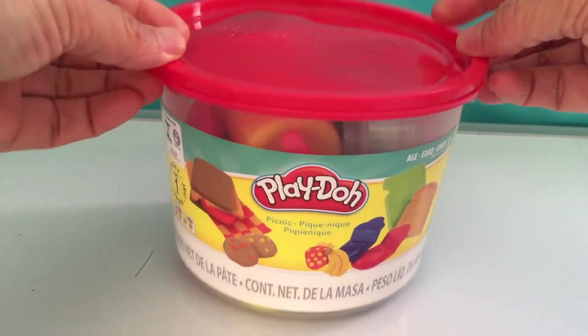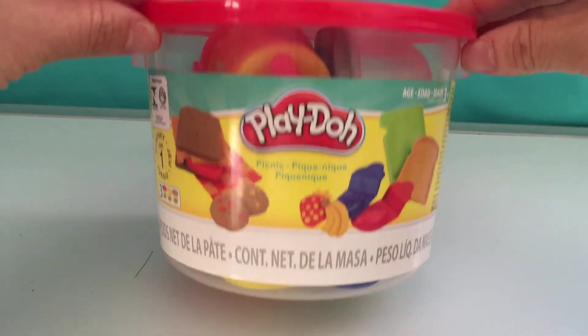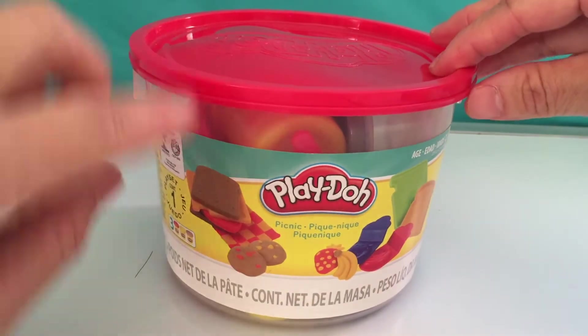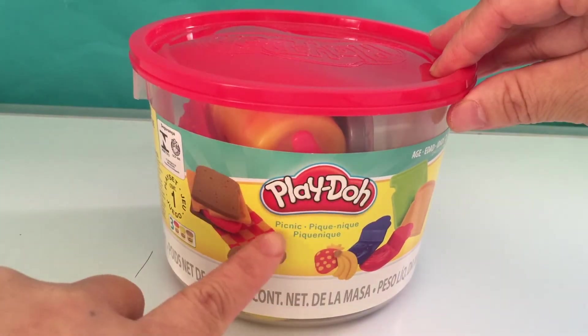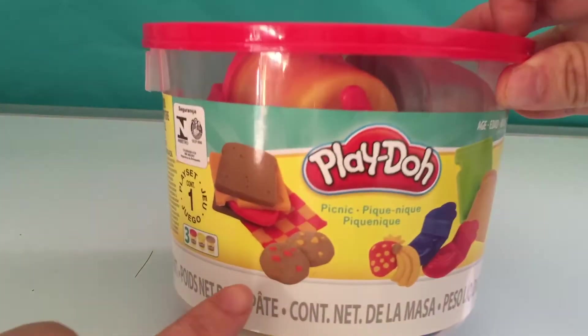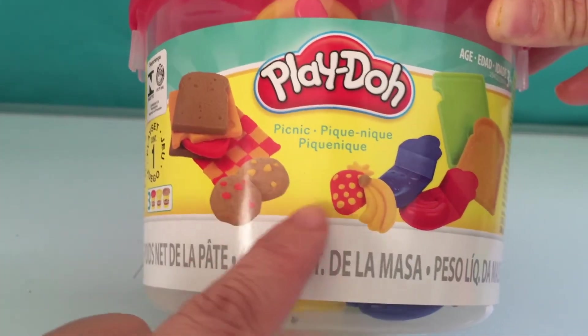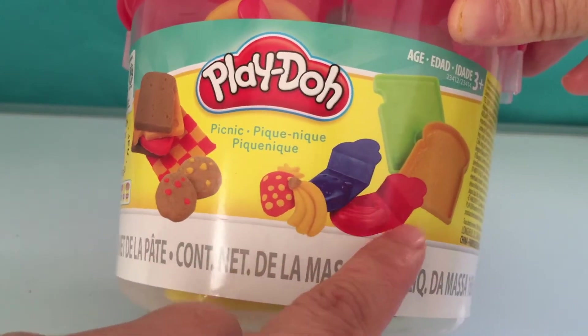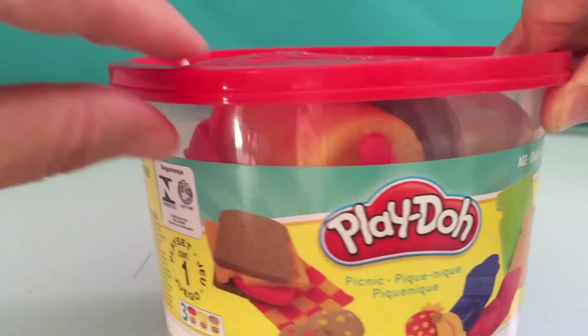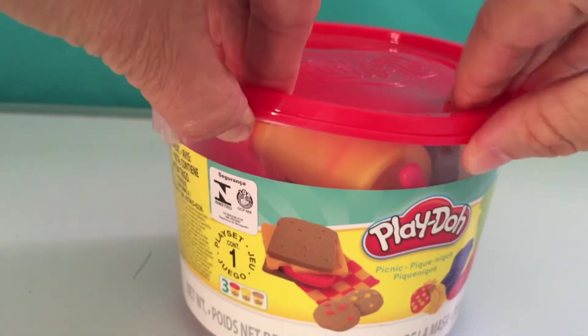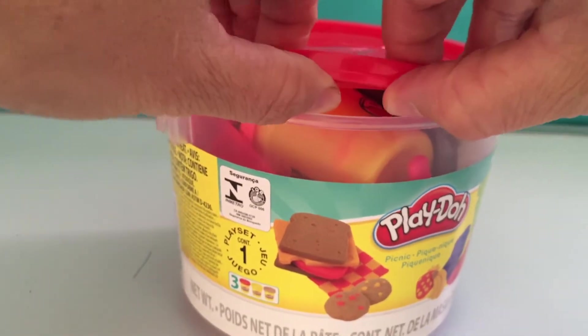Hello everyone! I've got a box of Play-Doh here. It's Play-Doh for picnic! Sandwich, veggie, strawberry, banana, and bread. Let's open the box and have a look at the Play-Doh set.